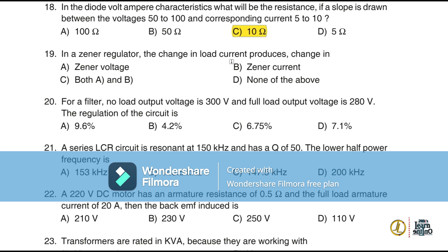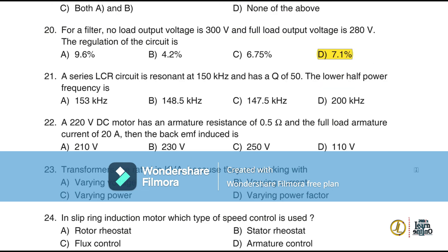In a Zener regulator, the change in load current produces a change in Zener current. For a filter circuit with no-load output voltage of 300 V and full-load output voltage of 280 V, the voltage regulation is calculated as (no-load voltage minus full-load voltage) divided by no-load voltage, giving approximately 7.1 percentage.